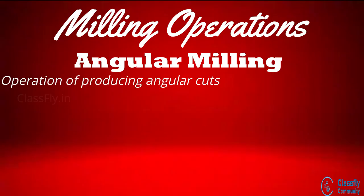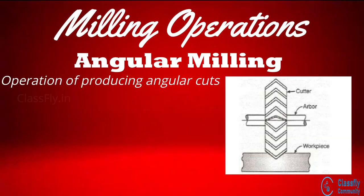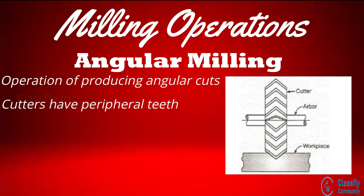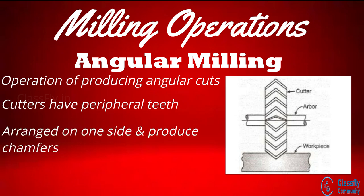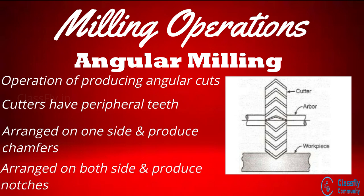Angular milling is a milling operation of producing all types of angular cuts such as V-notches, grooves, etc. The angle cutter will have peripheral teeth. Single angle cutters are arranged on one side to produce a chamfer on the workpiece edge. Double angle cutters are arranged on both sides of the cutter and hence can produce double angle cuts such as V-notches.